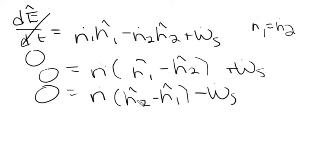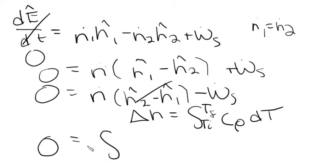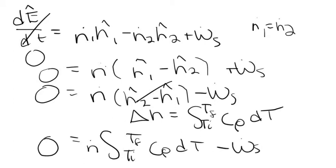We change H-hat-2 minus H-hat-1 into the change in enthalpy, which equals the integral from T_i to T_f of Cp dT. So we have 0 = N-dot × ∫(T_i to T_f) Cp dT − W_s. We're stuck here because we have two unknowns: the shaft work we're solving for, and the final outlet temperature.